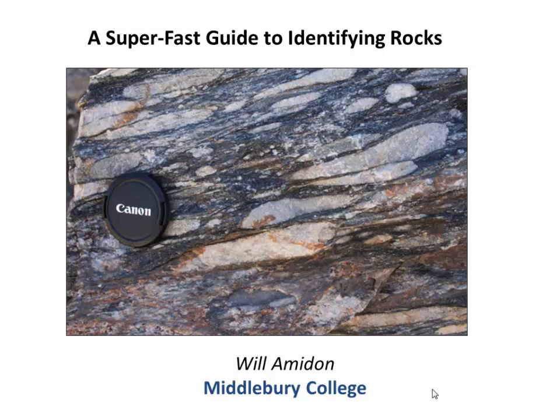Hey, welcome to my video, a super fast guide to identifying rocks. Take a look at this picture in front of you. This is a metamorphic rock called a stretched pebble conglomerate. Suppose I told you that this metamorphic rock was once actually a deposit of beach cobbles on an energetic ocean beach, and that ocean beach had formed in response to rifting of the eastern North American continent about 600 million years ago. That would be a pretty major interpretation just from looking at this one rock, but that's the kind of interpretations we can make if we understand how to identify rocks in the field and start to read out their history.